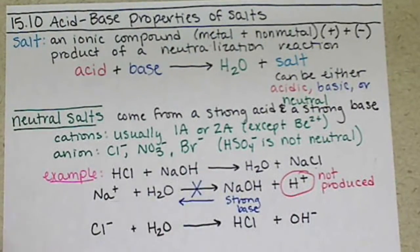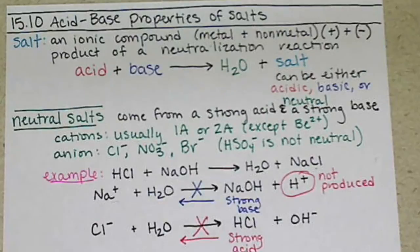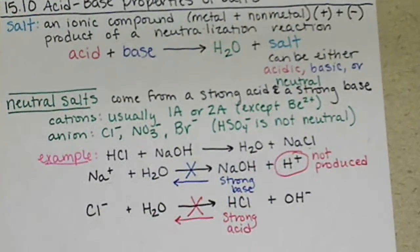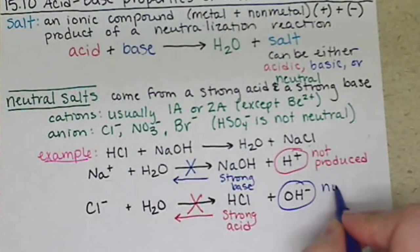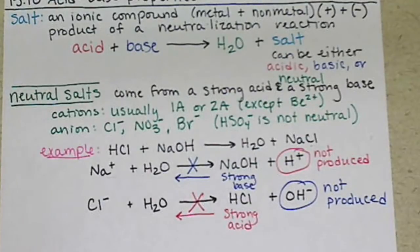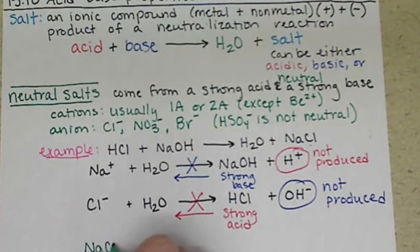For the chloride ion, we're saying that we hypothetically would form HCl, which is a strong acid. So same concept. That reaction actually happens in the reverse direction. So our OH- is not produced. So that solution is not basic, because we're not producing any base. So NaCl is a neutral salt.